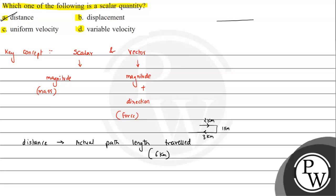Displacement is the shortest distance between the initial and final point, and direction is important here. For example, 2 km in the positive direction minus 1 km in the negative direction gives a displacement of 1 km. Since direction matters, displacement is a vector quantity, not a scalar quantity, so this option can be discarded.